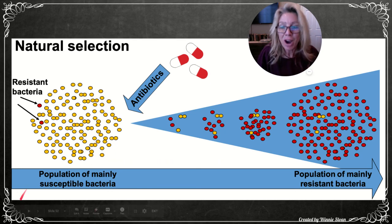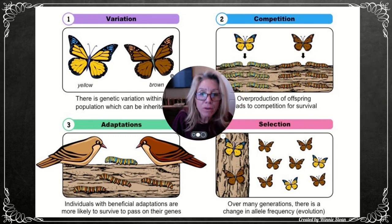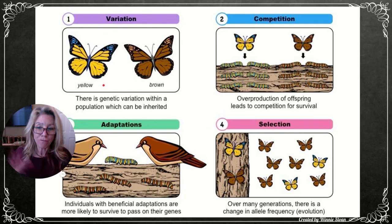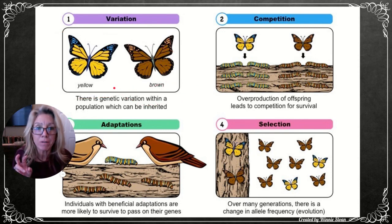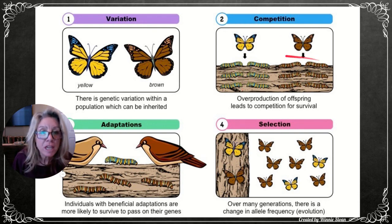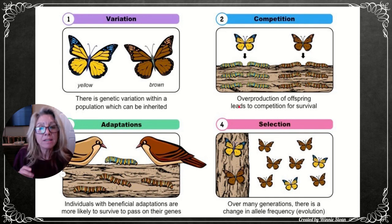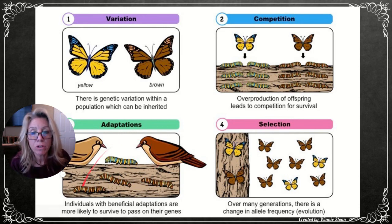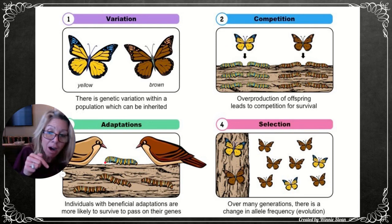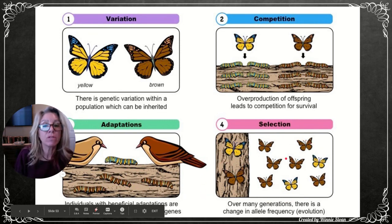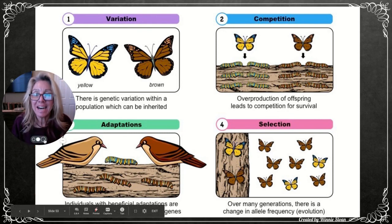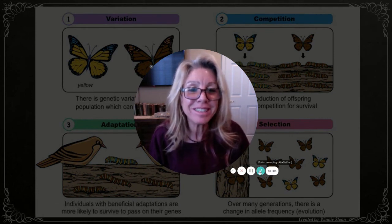Summary of natural selection: you have variation within a population — yellow and brown butterflies. There is overproduction of young leading to competition for food sources. Some individuals have better adaptations — darker-colored caterpillars are harder for birds to spot, so they survive and reproduce more. Over time, nature selects for the darker-colored butterfly. That is natural selection. Hopefully this was helpful — if you're one of my students, I'll see you in class.